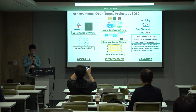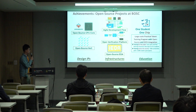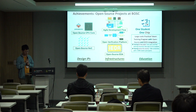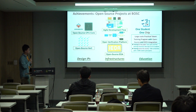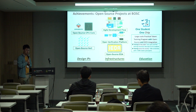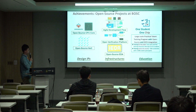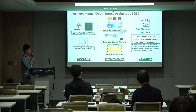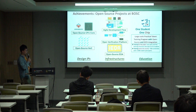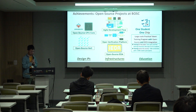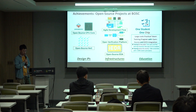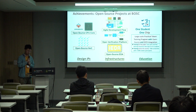Next I will introduce our open source projects in detail. There are three types. The first is open source IPs — similar to what ARM provides today — including open source CPU cores for high performance and for embedded, and open source NOC. Second, we provide open source infrastructures: an agile development flow for RTL and architecture design, an open verification platform for functional verification, and open source EDA tools comparable against the big three EDA companies. Third, we also provide a fully free and open large-scale training program for EE and CS students called One Student, One Chip. Today I will introduce all three parts.